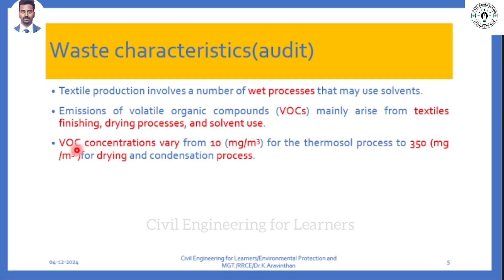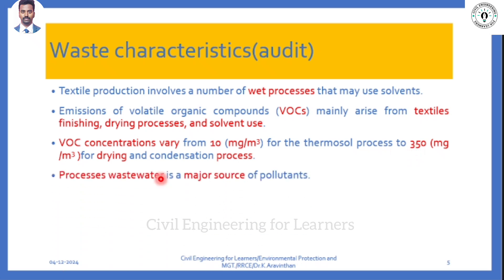Certain industries will have high emission rather than effluent waste - there is a difference. In textiles, effluents are very high - around 10 milligram per meter cube of volatile organic compounds. This will harm aquatic living beings, and from the thermosol process, 350 milligram per meter cube is generated during the drying process.